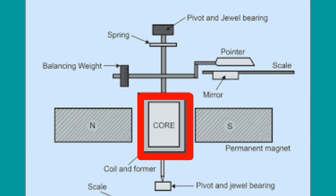The former increases the radial and uniform magnetic field between the air gap of the poles. The coil is wound with silk-covered copper wire between the poles of the magnet.